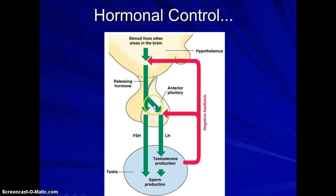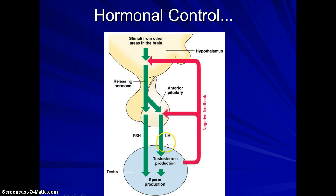When GnRH is secreted, it causes the secretion of luteinizing hormone and FSH. You just need to know the abbreviations FSH and LH, from the anterior pituitary. In a male, LH causes the secretion and production of testosterone in the testes.